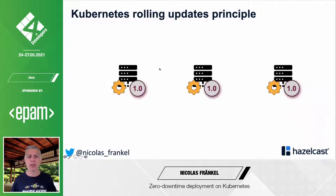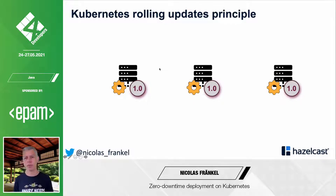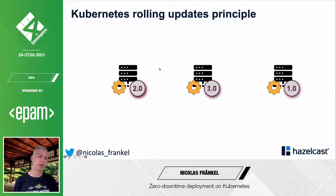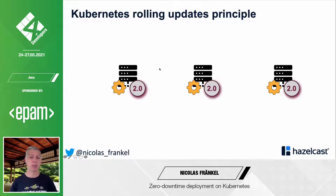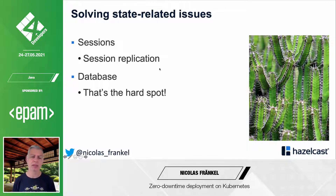Then comes Kubernetes, which will solve all your problems. Kubernetes has the idea of rolling updates — you deploy nodes at version 1.0, then roll them to the new version in a rolling fashion. It seems perfectly fine, but I'm not so sure.